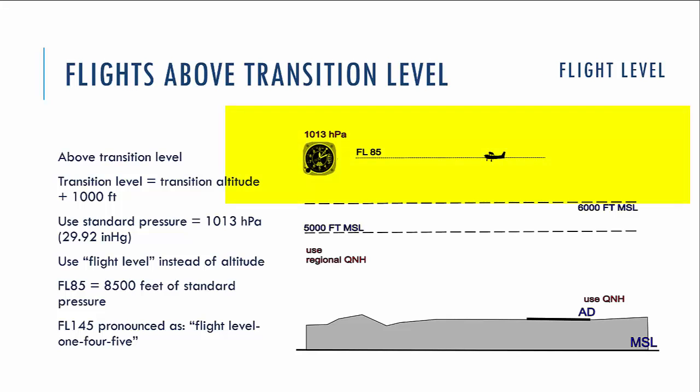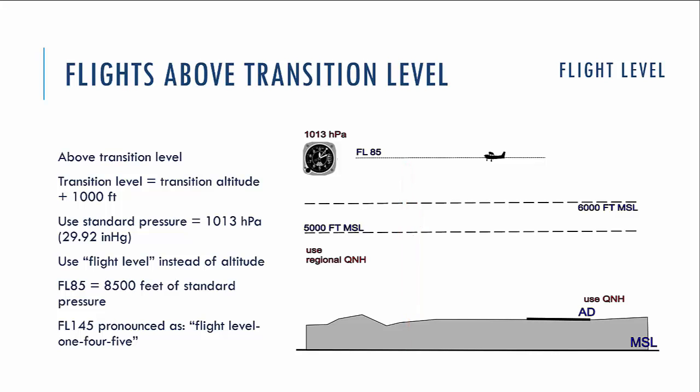When we are flying above the transition level, we indicate the vertical position of the aircraft not in altitude, but in flight level. Flight level is the indication of the vertical position in feet — in hundreds of feet — but measured with the standard atmospheric pressure set on the altimeter. The standard atmospheric pressure is 1,013 hectopascals in Europe, and 29.92 inches of mercury in the United States.